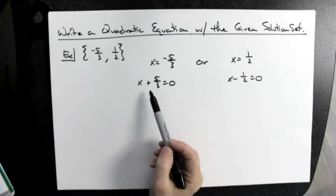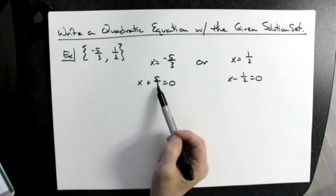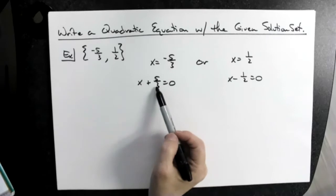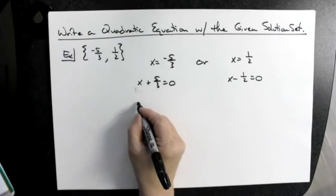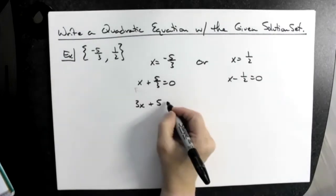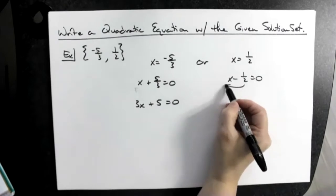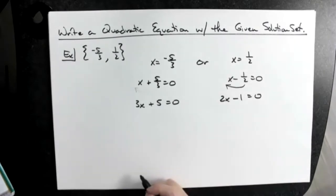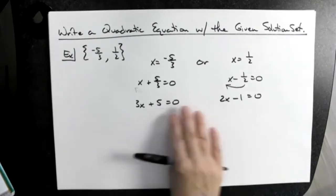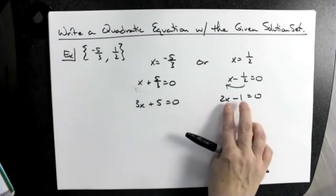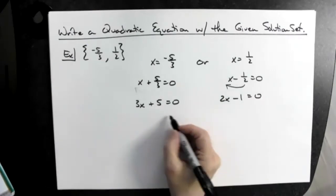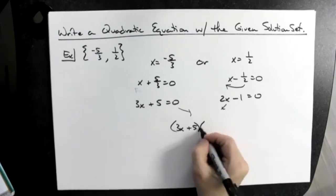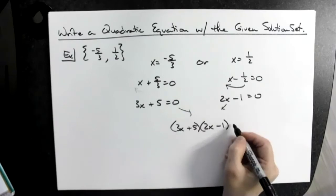Now think about slide and divide. I'm trying to create two factors here. Slide and divide: move the three in front, so this becomes three x plus five equals zero. And slide and divide on the other side: move the two in front, so this becomes two x minus one equals zero. Now I have two binomials. Putting them together: three x plus five times two x minus one equals zero.